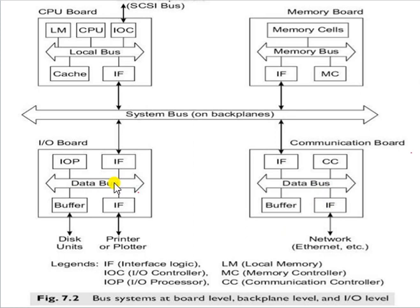The backplane bus is a printed circuit board on which many connectors are used to plug in functional boards. The system bus, built on the backplane, provides a common communication path among all plugged-in boards. The IO bus is used to connect IO devices to the computer system — for example, the SCSI bus, made of coaxial cables with tabs connecting disks, printers, and other devices to the processor through an IO controller. Special interface logic connects various board types to the backplane bus.